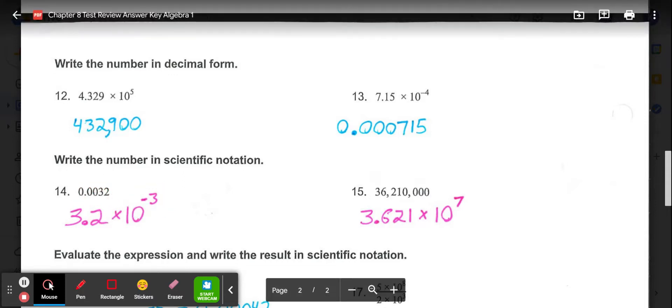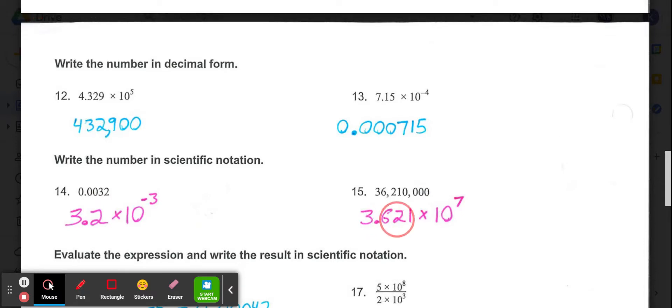In 15, we would have 3.621 multiplied by 10 to the 7th to get back to this original number, because we dropped four zeros and the decimal then, on top of those four zeros, moved another three numbers in. So 3 and 4 would be 7.